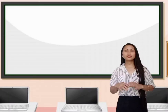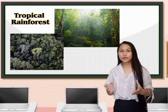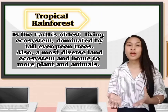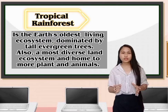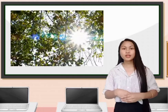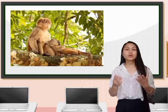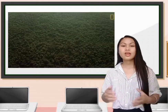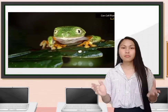Now let's move on to the tropical rainforest. A tropical rainforest is the Earth's oldest living ecosystem, dominated by tall evergreen trees. They are found in the tropics or areas near the equator, like the Philippines. Since areas near the equator receive direct sunlight, tropical rainforests have a high average temperature throughout the year. They are also very wet, receiving a high amount of rainfall every year. Tropical rainforests are also the most diverse land ecosystem and serve as the home to more types of plants and animals.